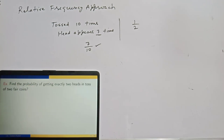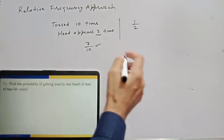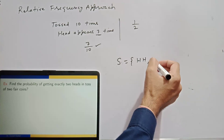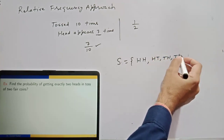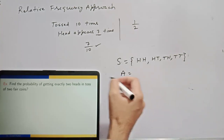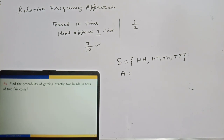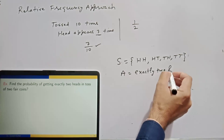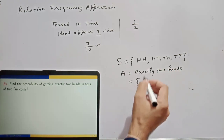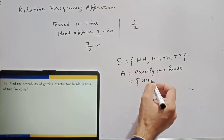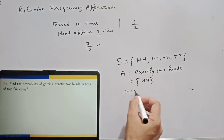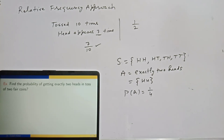Example: find the probability of getting exactly two heads in a toss of two fair coins. The sample space is {HH, HT, TH, TT}. Let A be the event of getting exactly two heads — so A contains only the point HH. By the classical formula, P(A) equals 1 over 4, because the number of elements in A is 1 and the number of elements in S is 4.